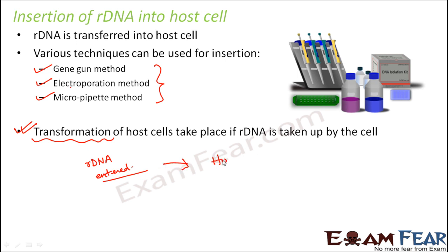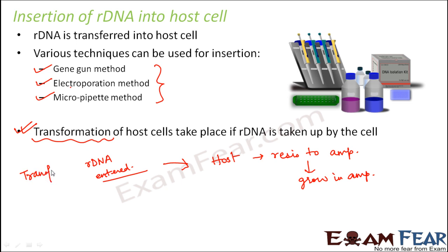If the recombinant DNA has entered the host cell, the host will be resistant to ampicillin and will grow in ampicillin medium because the antibiotic will not affect it. If you grow the host cells on an agar plate with ampicillin, the transformants will be able to grow. The non-transformants, which are not resistant to ampicillin, have not taken up the rDNA. This is how you determine how many cells got transformed.